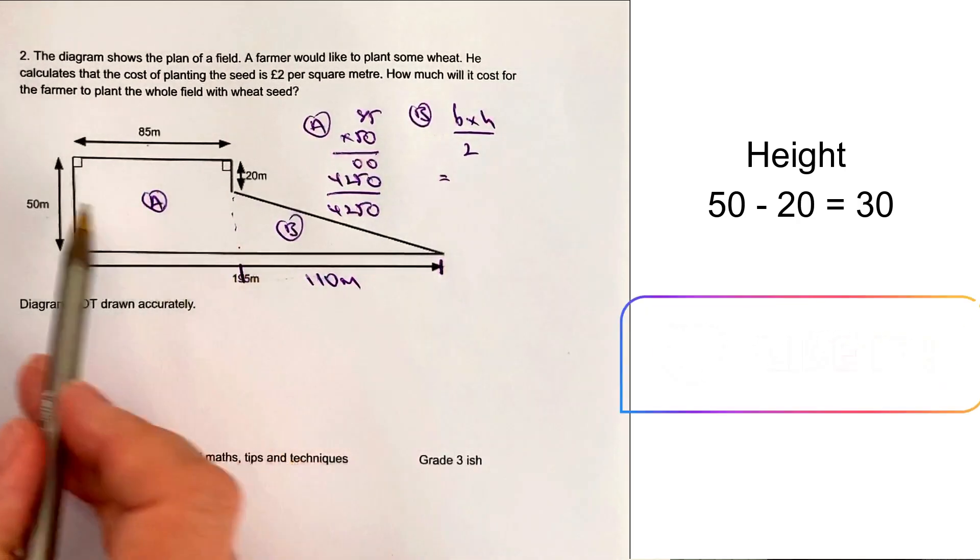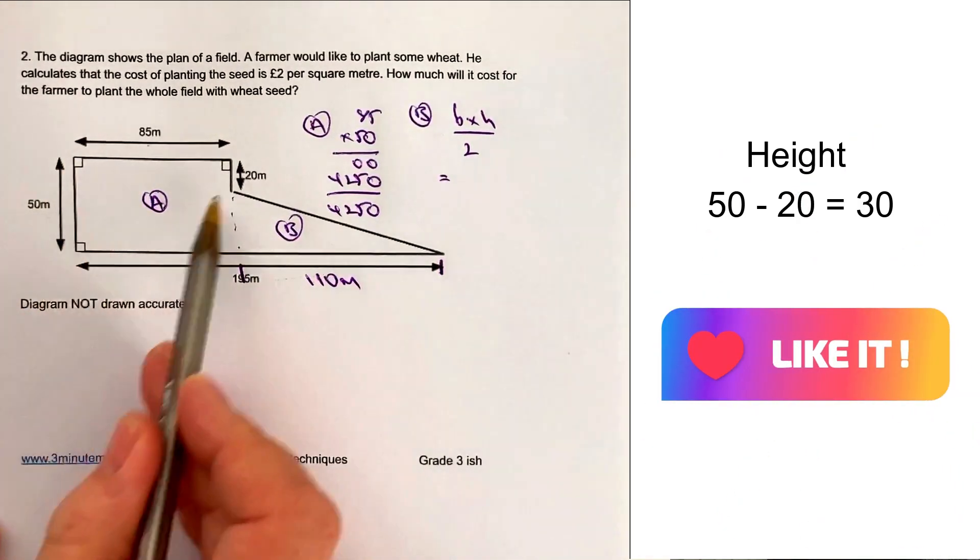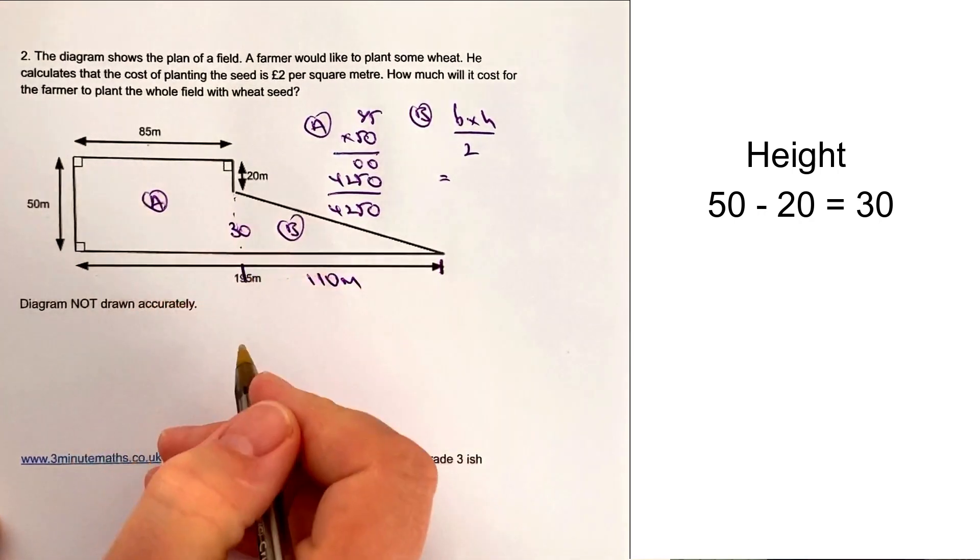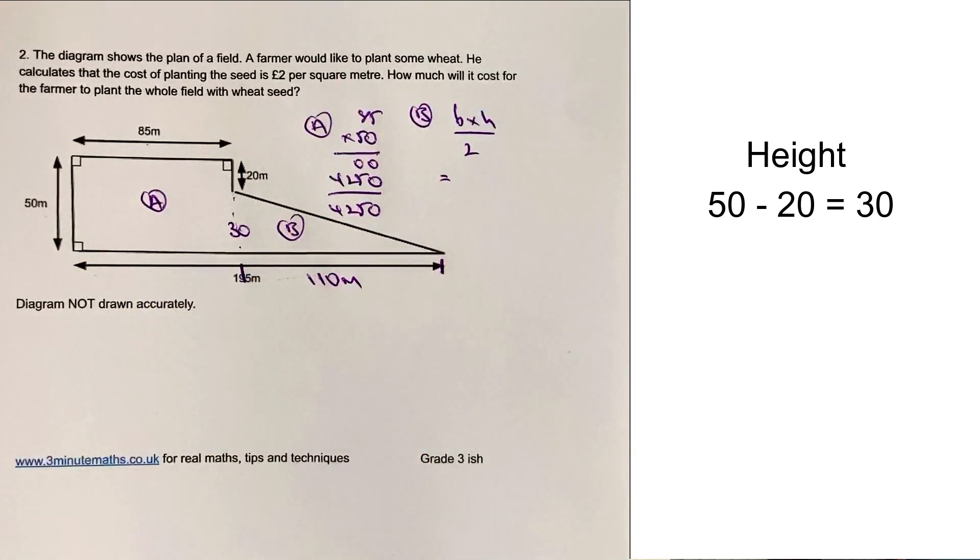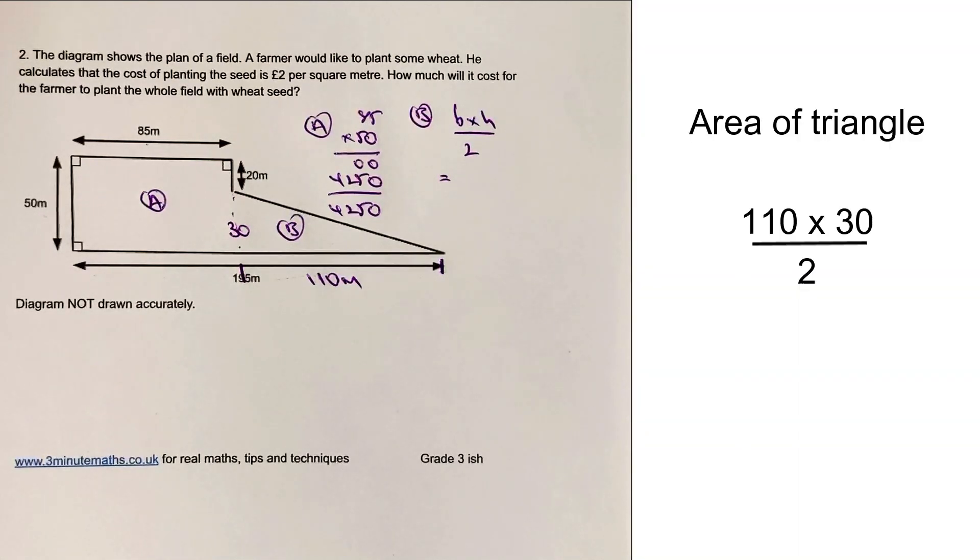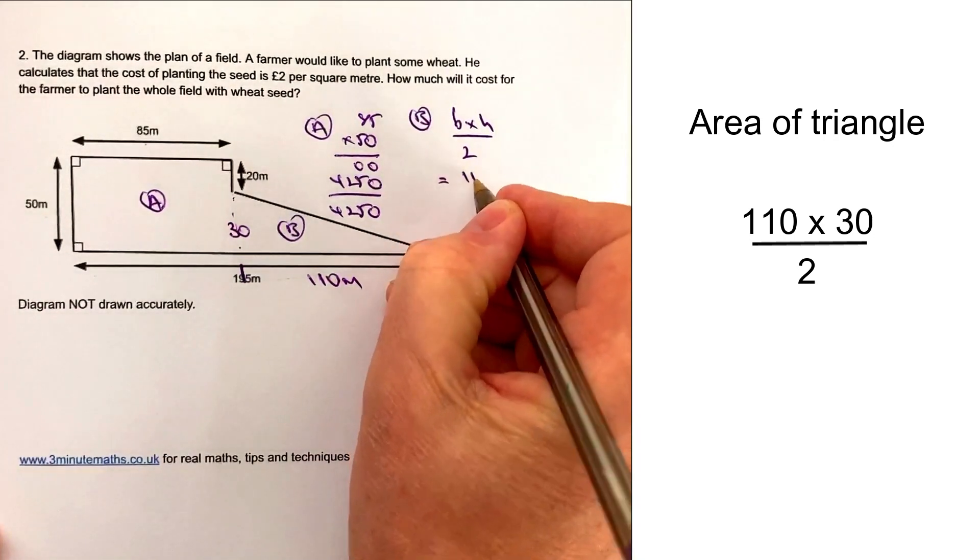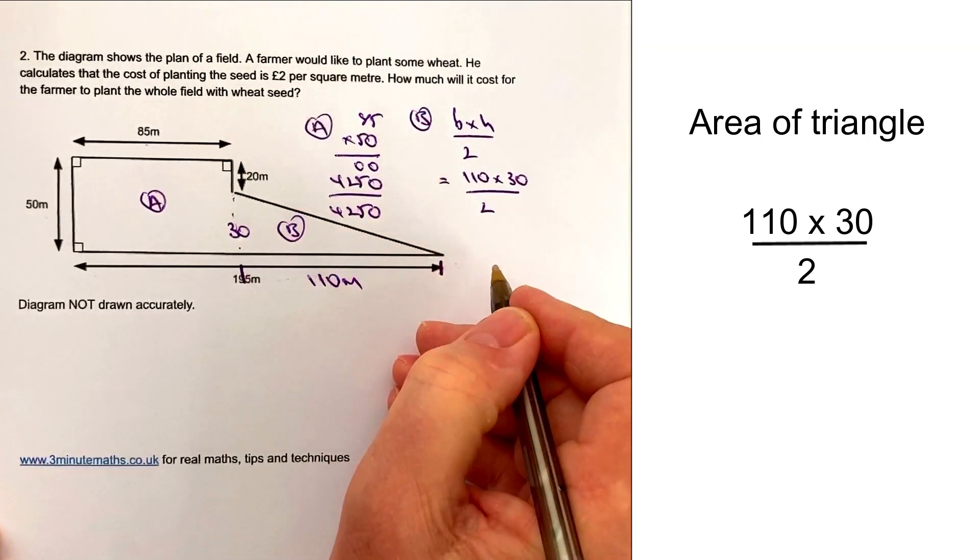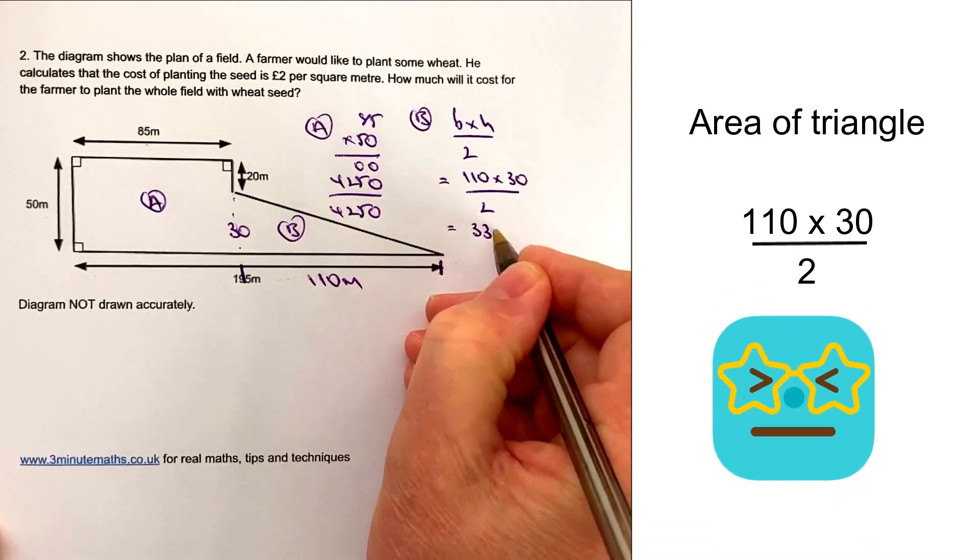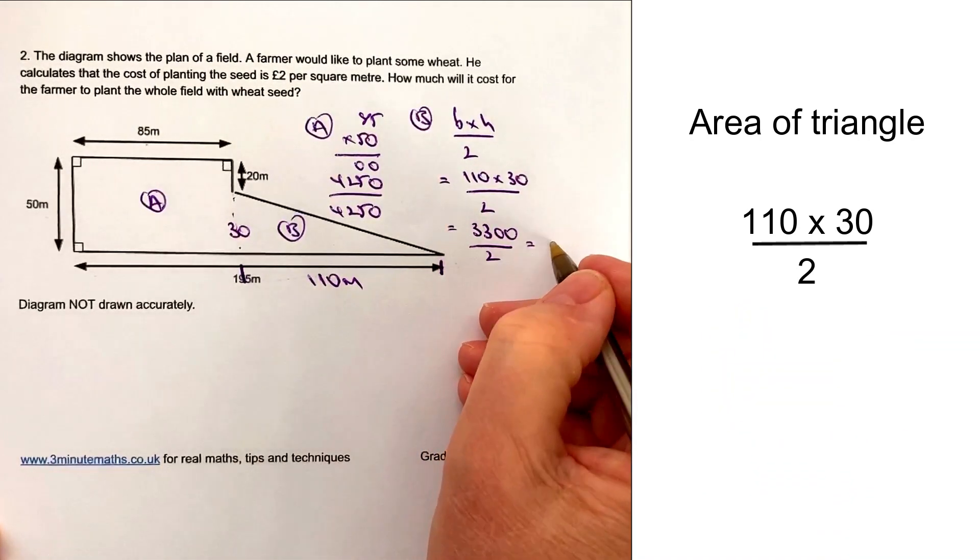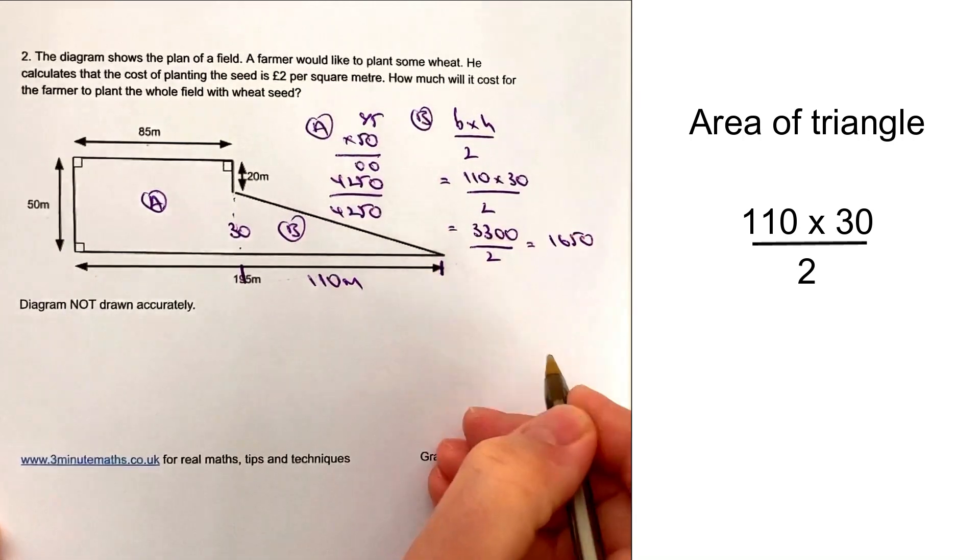Likewise with the height, I know overall it's 50, but this drop here is going to be 20, so therefore it's going to be 30 on the height. Very frequently with these sorts of questions you have to check those. Let's put this into the calculation: 110 multiplied by 30, all divided by 2. You will have some different calculations perhaps, but hopefully you'll end up with the same result: 1650.